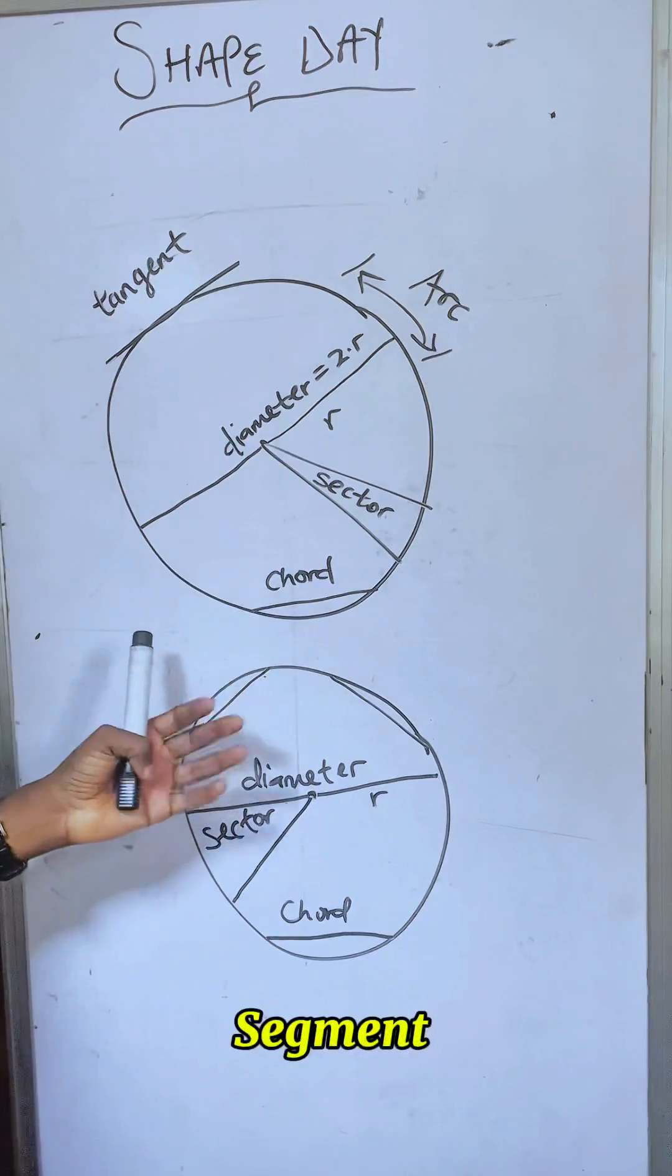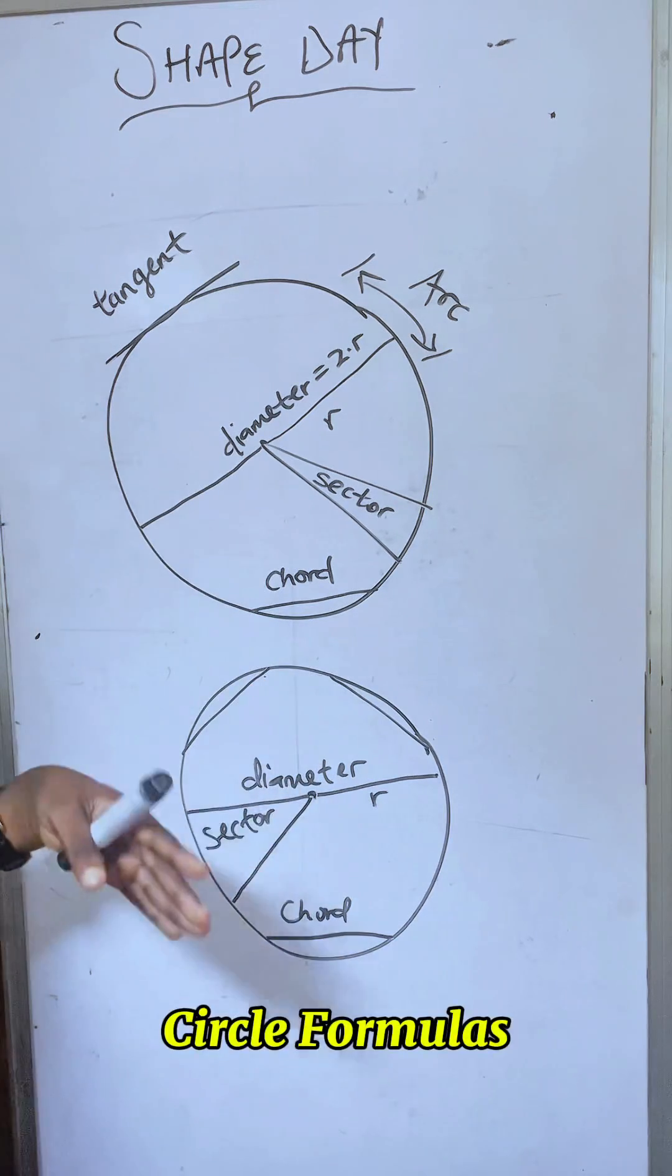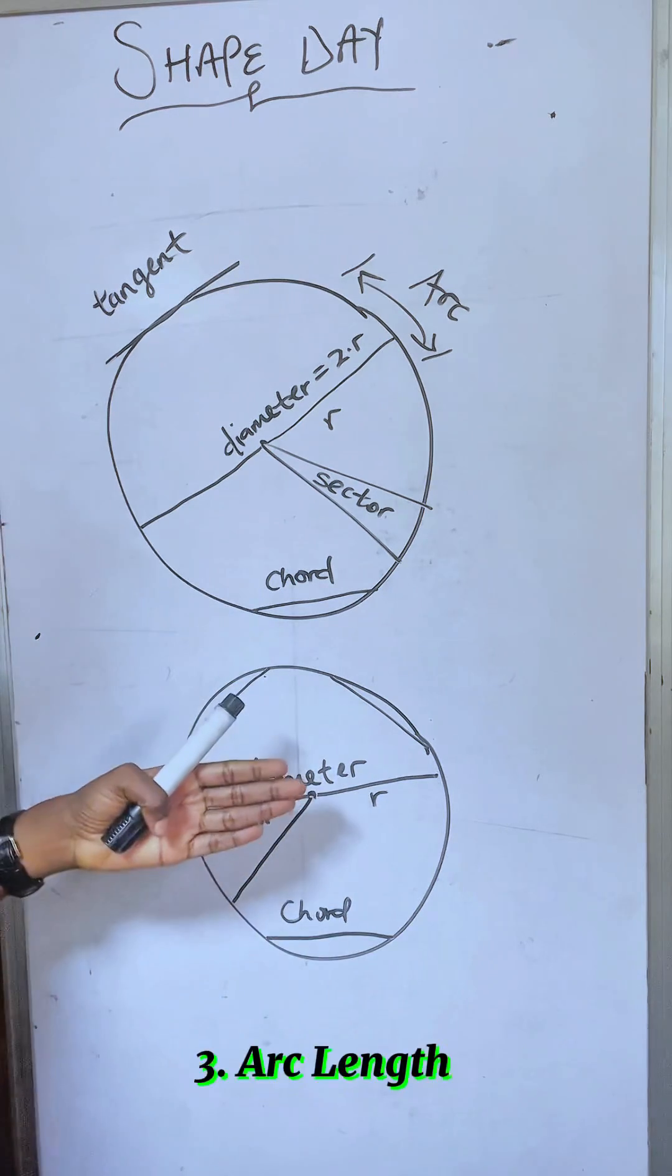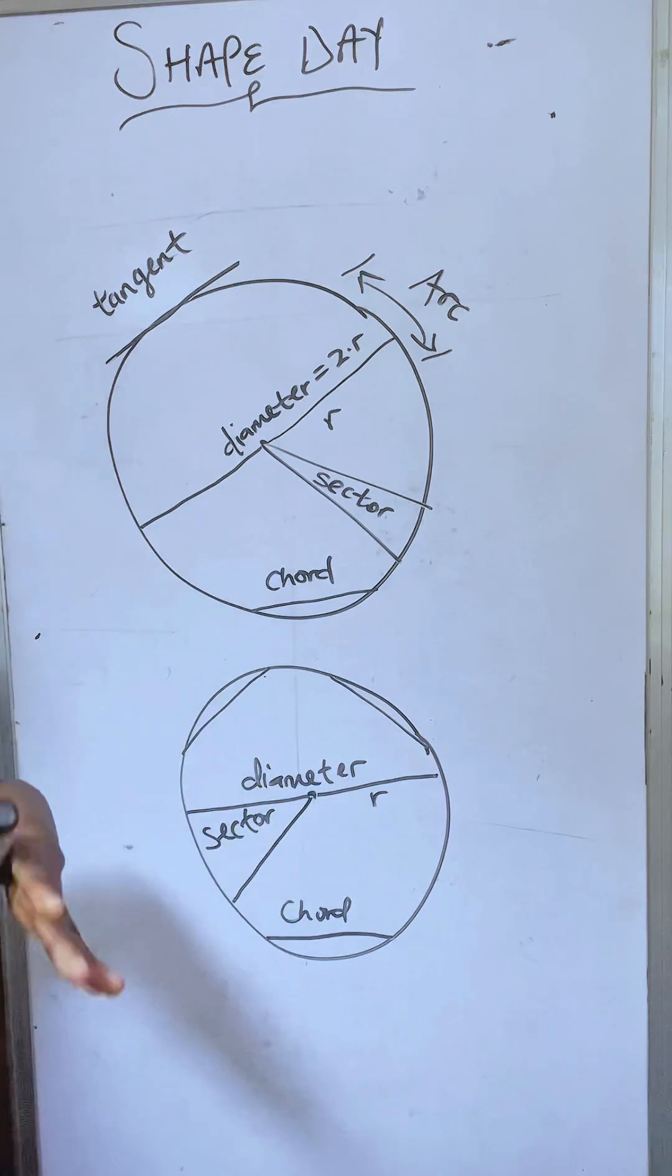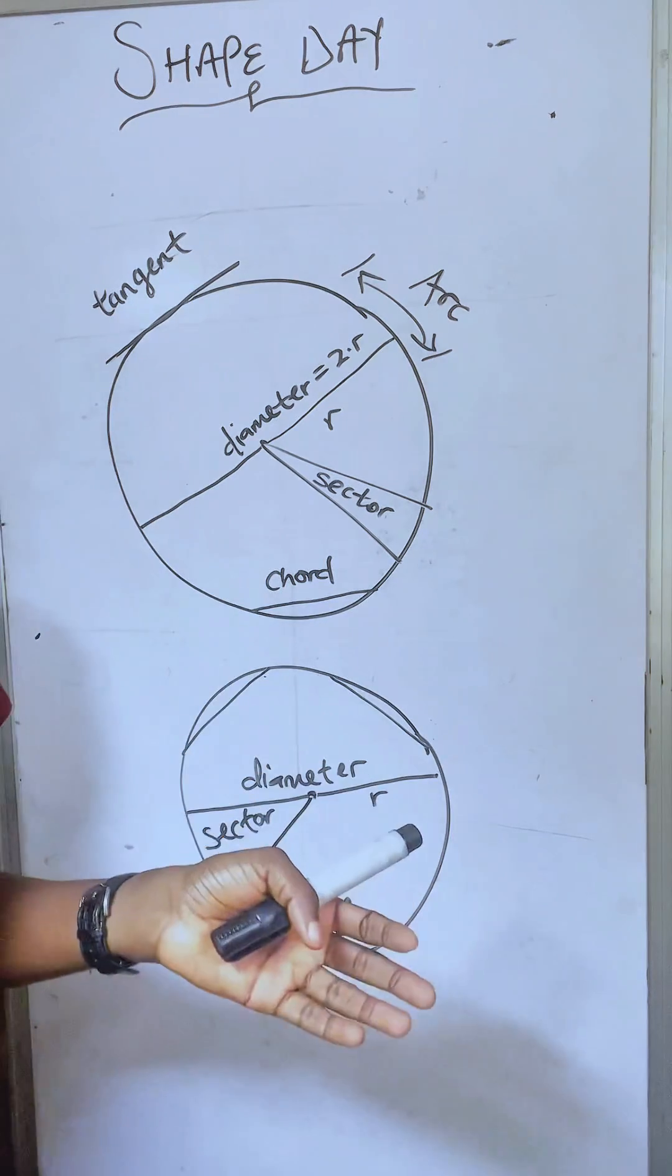We also have the segment. We have the secant. We have the circle formulas, which is the area of a circle, circumference of a circle, the arc length, the area of a sector, length of chord, area of segment formula, and so on and so forth.